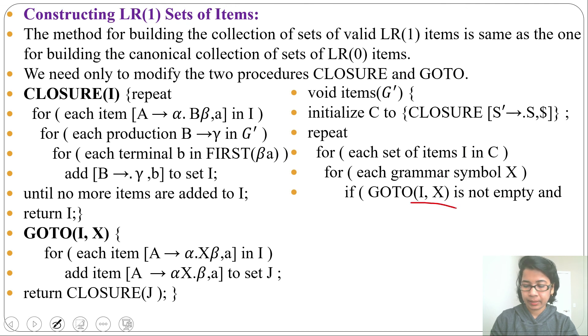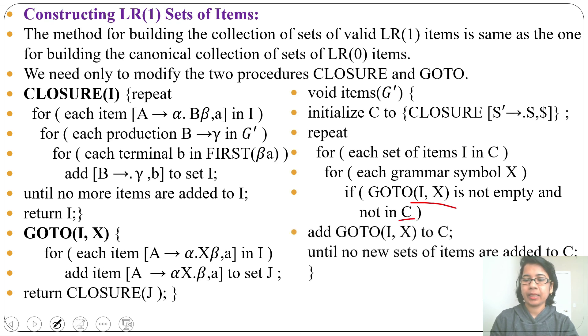Then from initial state we need to do GOTO transition. If GOTO(I, X) is not empty and not in C—not in C, C means set of states—if that state is not present, then add that GOTO(I, X) to C.